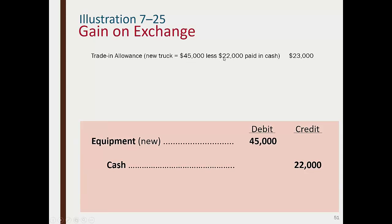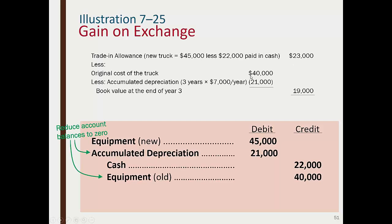If we trade the old truck for a new truck worth $45,000, putting $22,000 down and financing $23,000: the old truck had book value of $19,000. Journal entry: debit New Equipment $45,000, debit Accumulated Depreciation $21,000, credit Old Equipment $40,000, credit Cash $22,000, credit Notes Payable $23,000 (or however financed). The old truck comes off the books and the new one goes on.